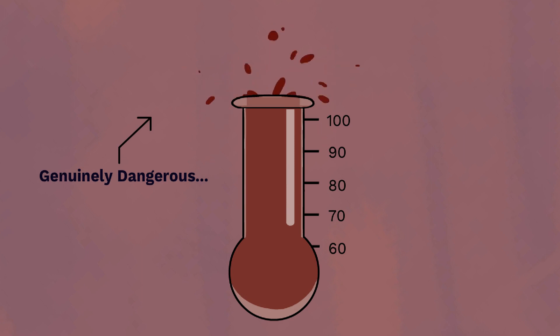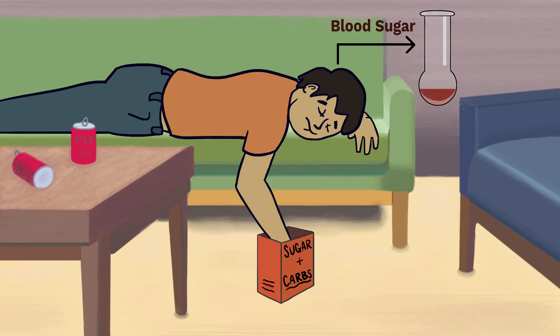Your blood sugar goes above 100 because of what you put in your body. When you eat and drink sugary things, your blood sugar rises above 100 and you create glycogen.